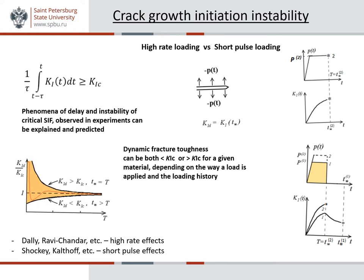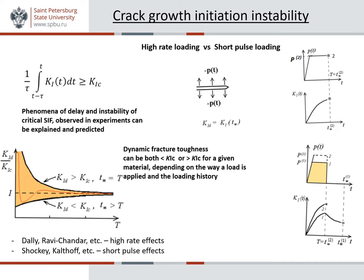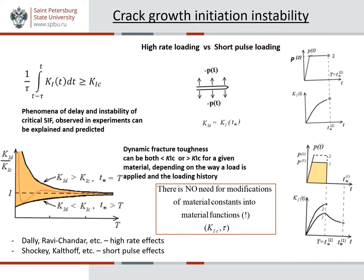Finally, we will have the following temporal dependency for dynamic fracture toughness K1D. K1D turns out to be unstable — it can acquire any value from the yellow region between the threshold case lower curve and the case when the applied load acts up to the moment of fracture upper curve. Even a non-monotonic dependence for K1D is possible, as shown by the red curve, and it was experimentally observed by Professor Kalthoff. This is how the incubation process phenomenologically works, confirmed by experiments. Only two material constants are needed here, and there is no need for modifications of material constants into material functions in order to calculate all these effects.